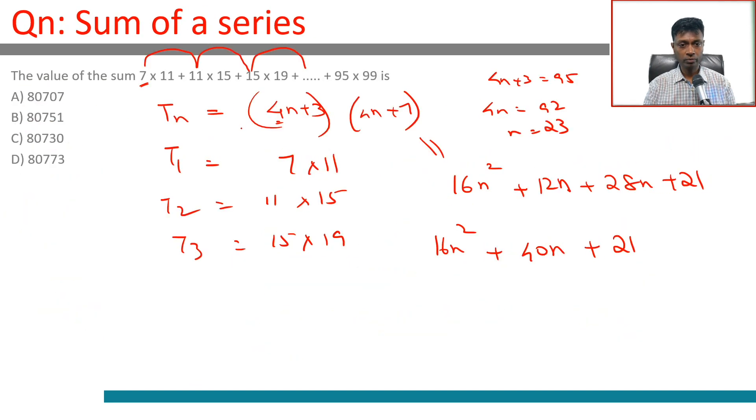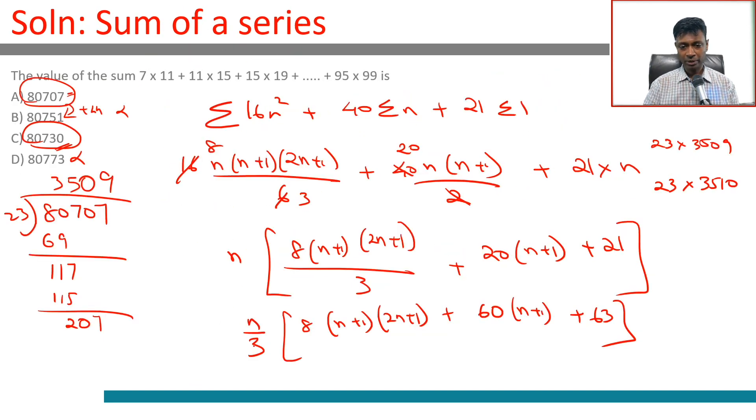So n by 3, 23 by 3 into 8. This 23 by 3, 8 into 24 into 2 times 23 is 46 plus 1 is 47, plus 60 into 24 plus 63. This becomes 8 times 21. 60 into 8 is 480, this is 21.